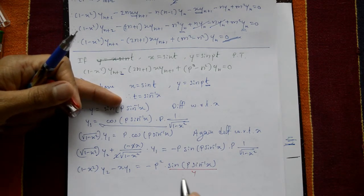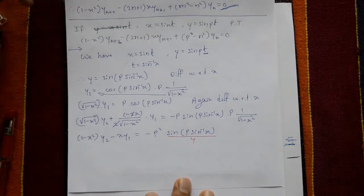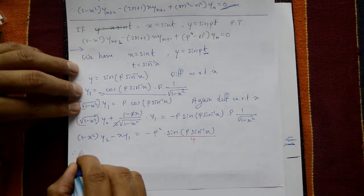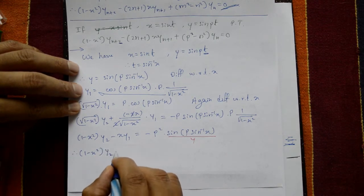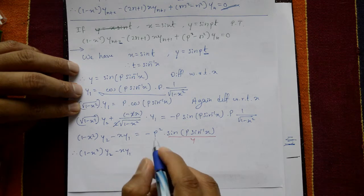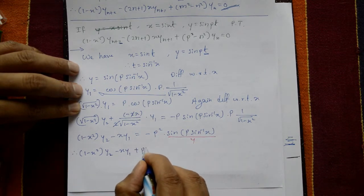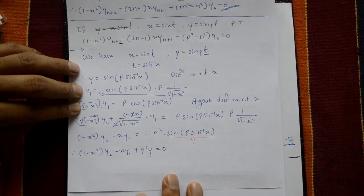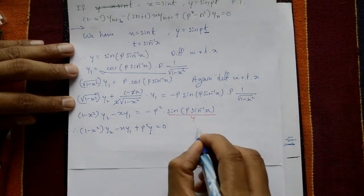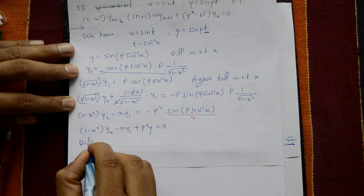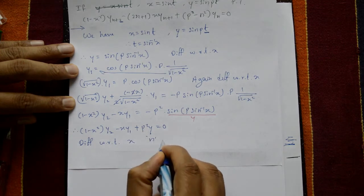Since y = sin(p · sin⁻¹ x), the right-hand side is −p² y. Shifting to the left: (1 - x²) y₂ − x y₁ + p² y = 0. This is our base equation.